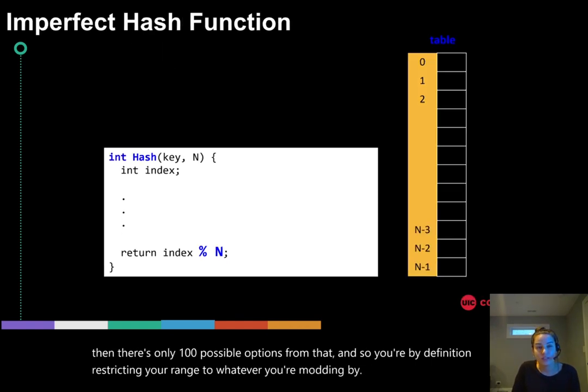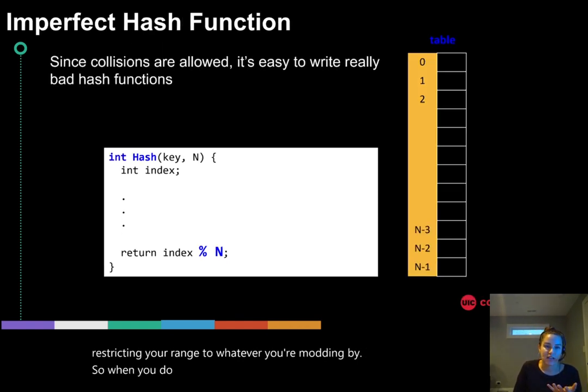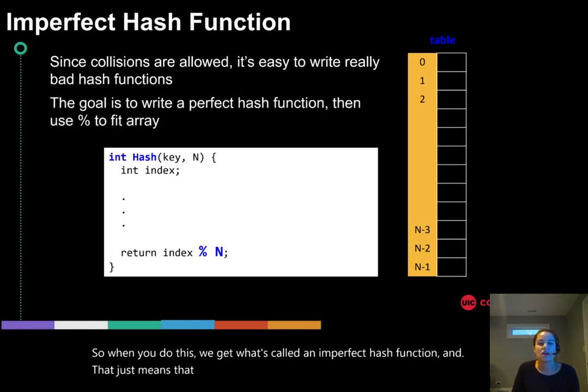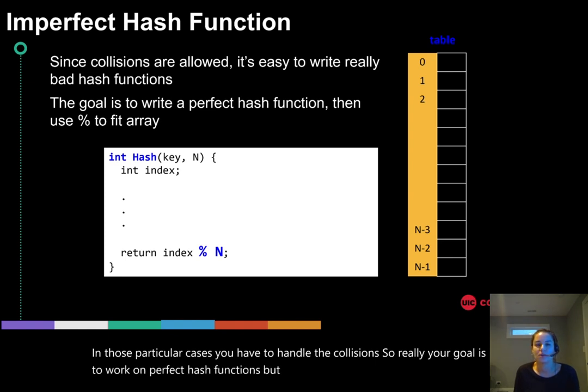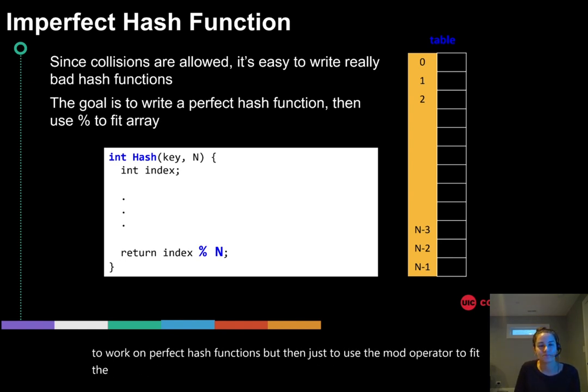So when you do this, we get what's called an imperfect hash function. And that just means that you're going to have collisions. And in those particular cases, you have to handle the collisions. So really your goal is to work on perfect hash functions, but then just use the mod operator to fit the array if needed to minimize the size of the array.